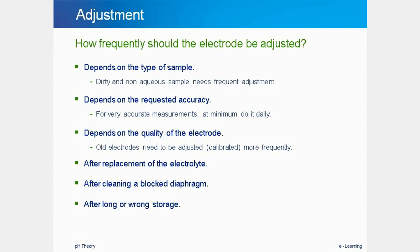For standard use with easy samples, the electrode should be adjusted at least every day before measurements are begun. With more demanding samples which are dirty or non-aqueous, adjustment needs to be performed more frequently. If high accuracy is required, adjustment should be performed more often. With older electrodes, adjustment also needs to be performed more frequently. After certain procedures the electrode always needs readjustment — these include replacement of the electrolyte, cleaning of a blocked diaphragm, after storage, and after regeneration.